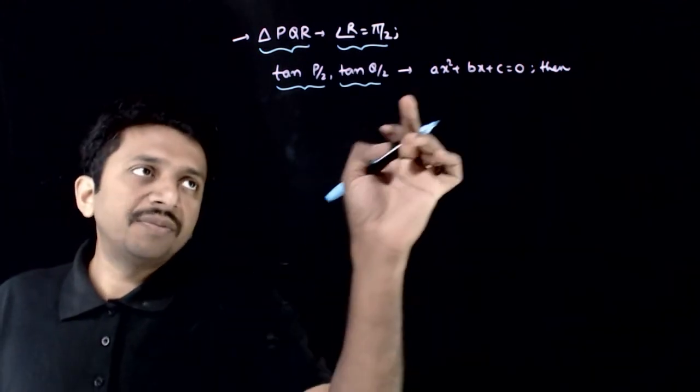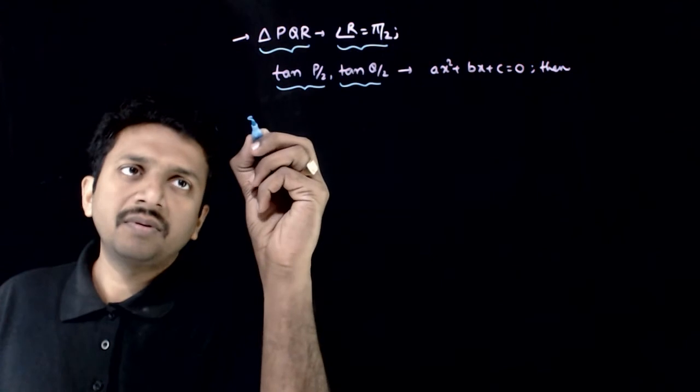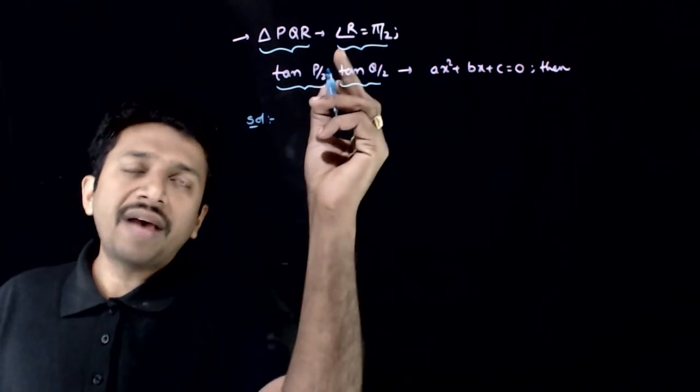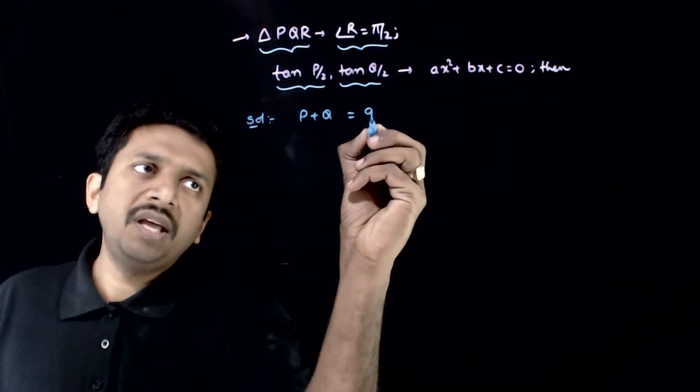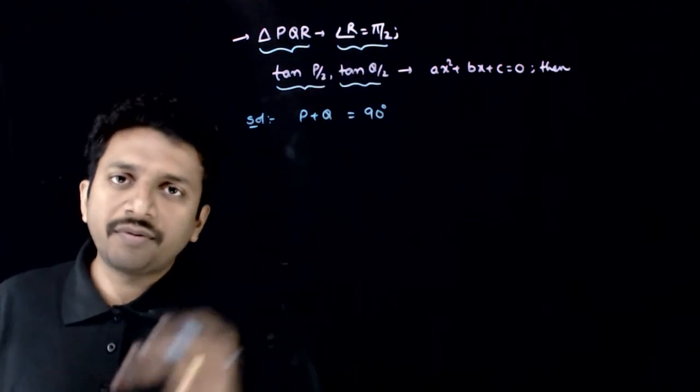In that case, you are asked to find the relation between A, B and C. So, how do we do this? If angle R is equal to 90 degrees, angle P plus Q should also be equal to 90 degrees because the sum of angles is 180 degrees.